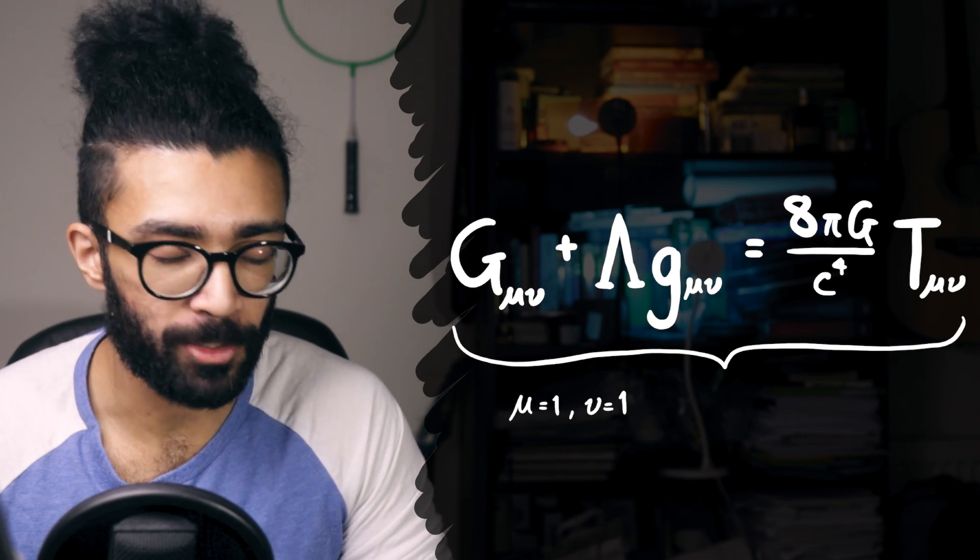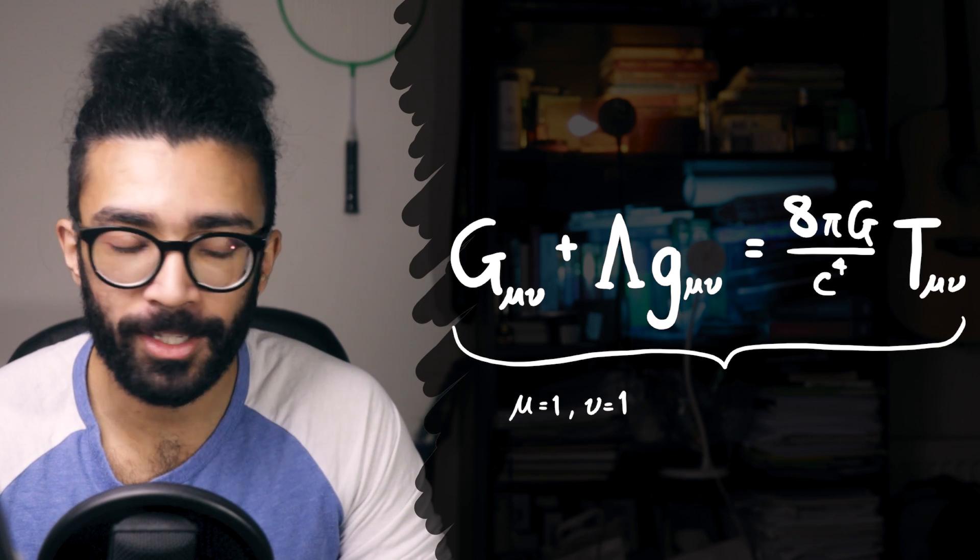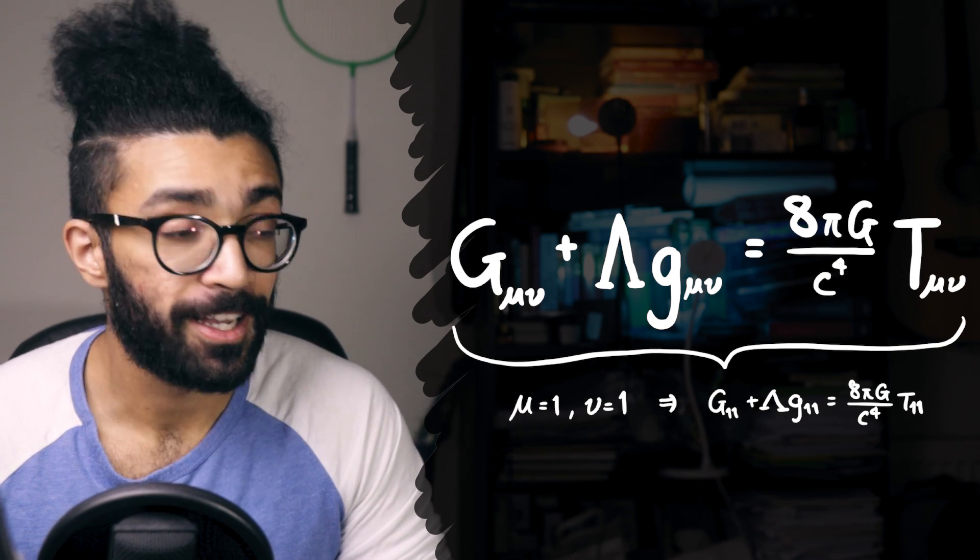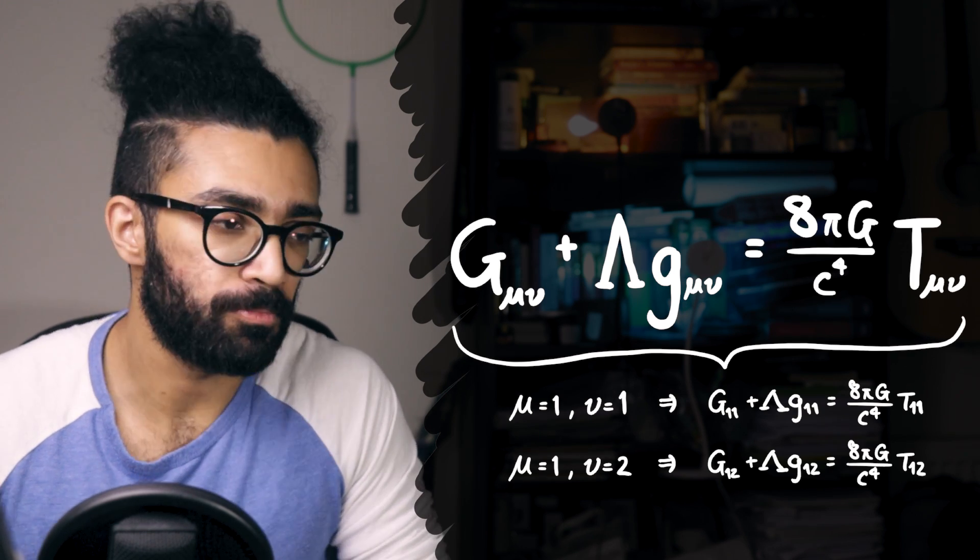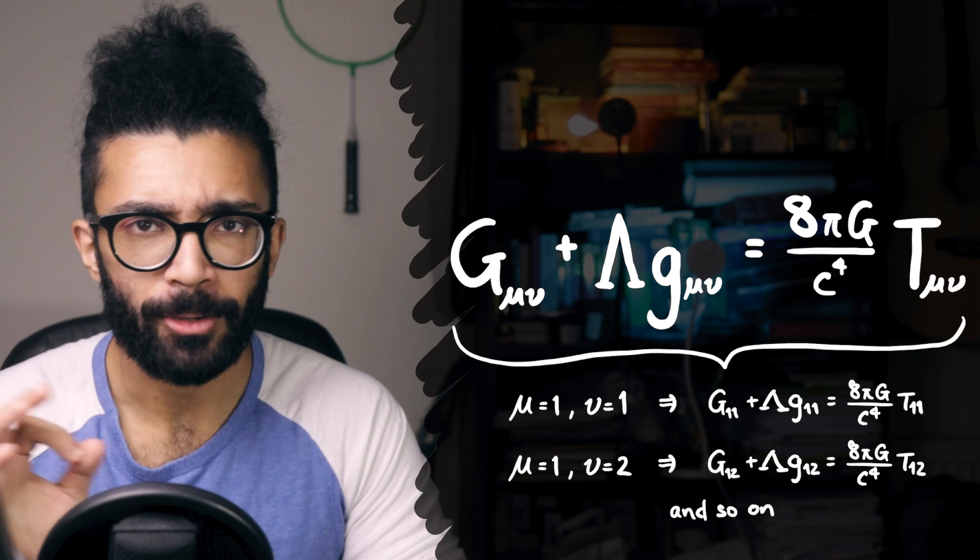Which, by the way, is also a really good way to see that these are referring to multiple equations. Let's say we've got mu is equal to one and nu is equal to one. Well, then that's one equation. Another possible combination is mu is equal to one and nu is equal to two, or any other possible combination of mu and nu.